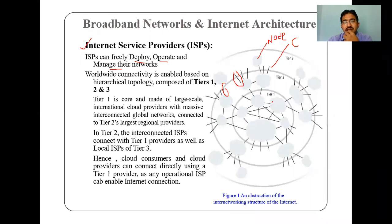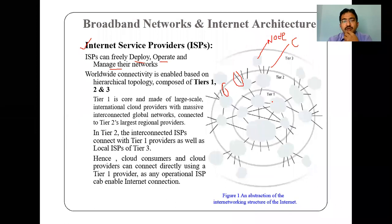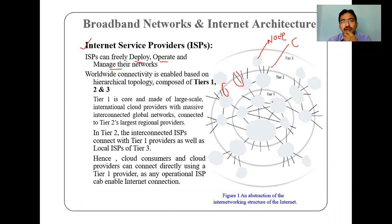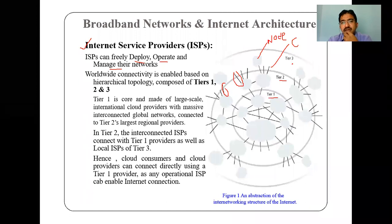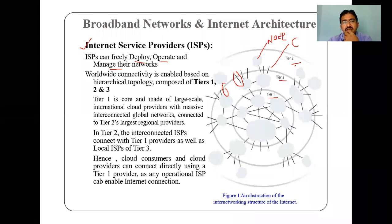In tier two, it is a little bit partially connected. In tier three, it is somewhat less connected. Here it is a combination of wire and wireless, and in tier three, most probably we are going to use wireless — that is the variation. Worldwide connectivity is enabled based on a hierarchical topology composed of three tiers. These hybrid hierarchical topologies are composed of three tiers: tier one, tier two, and tier three.